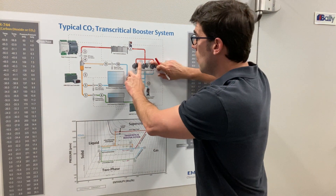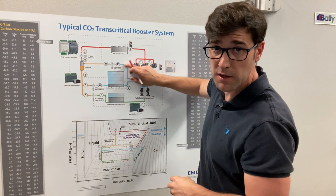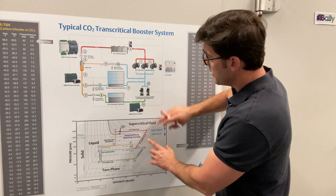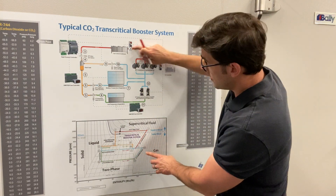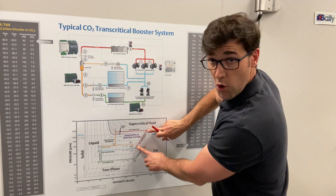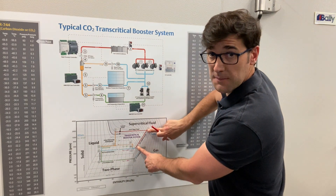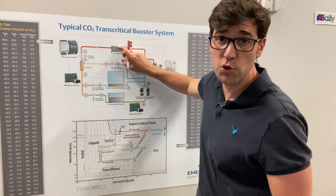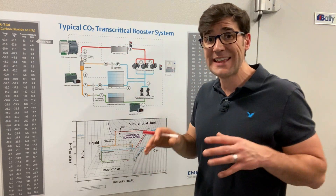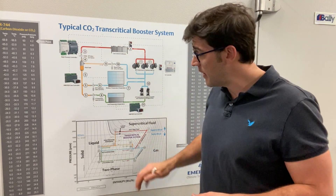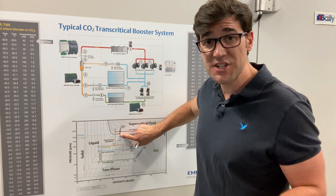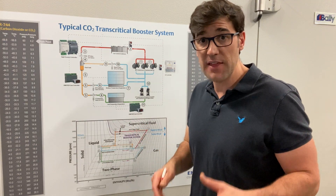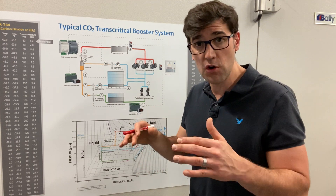Number one right here — these are the medium temp compressors, Copeland's 4MTLS compressors. From one to two is the discharge, so we go from one to two: medium temp compression into something we call a gas cooler or condenser. It's a gas cooler when you're above CO2's critical point, which is 87.8°F or 31°C, and at that point you're in the transcritical zone.